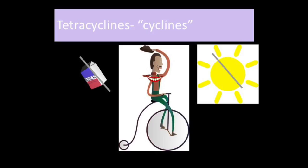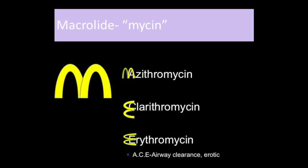Macrolides are a class of antibiotics that end in '-mycin.' They inhibit protein synthesis and can be either bactericidal—killing the bacteria—or bacteriostatic, meaning they stop the bacteria from multiplying. Using the mnemonic ACE, the three big macrolides are azithromycin (the Z-Pak), clarithromycin, and erythromycin. Macrolides are used to treat respiratory tract infections, pneumonia, and STDs—think ACE for airway clearance and related infections.